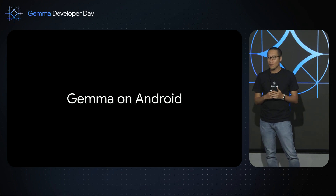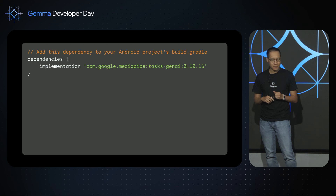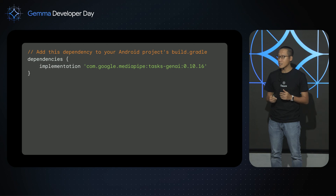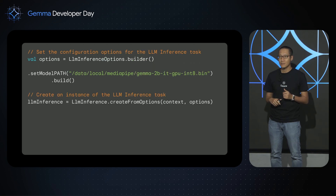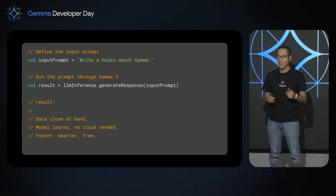Because MediaPipe is cross-platform, you can similarly run Gemma 2 on mobile with a very similar high-level API. Now let me show you how to do that on Android. You go to the build.gradle file for your app and add the MediaPipe SDK as a dependency. Then you load the Gemma model you downloaded from Kaggle, and then you send an input prompt to the model and get the results back — very similar to the web API that you saw earlier.